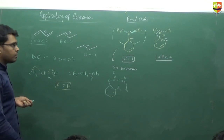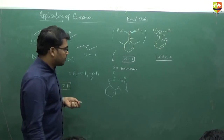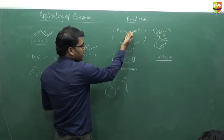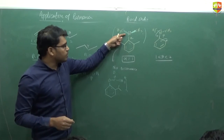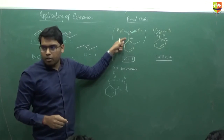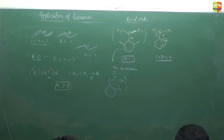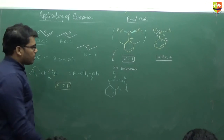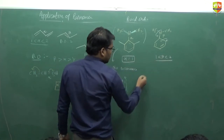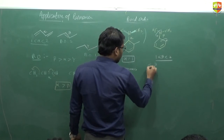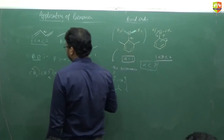Because of this steric hindrance, the CS₃ group changes its plane, and the entire molecule becomes non-planar — resonance is not possible. So alpha bond order is one, and beta bond order is more than that of alpha. Write down this example properly. Bond order of beta is more than that of alpha.